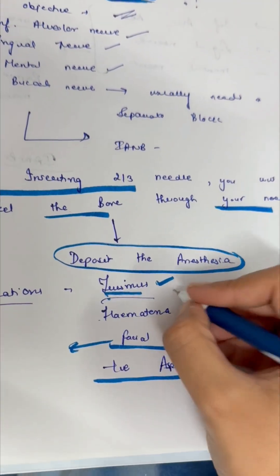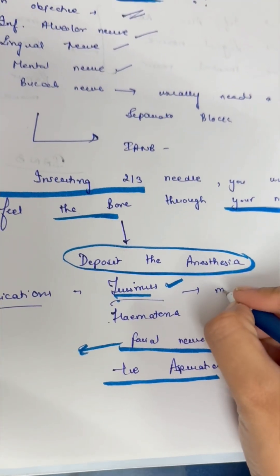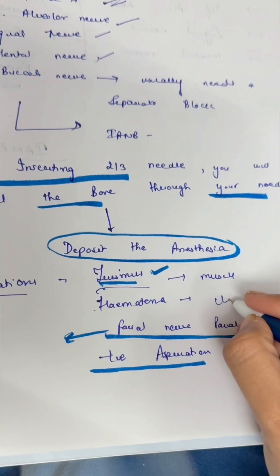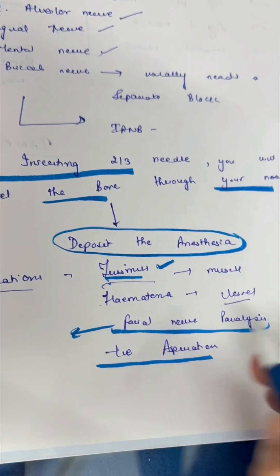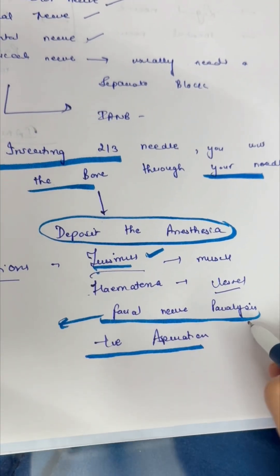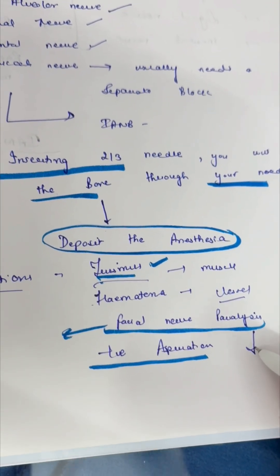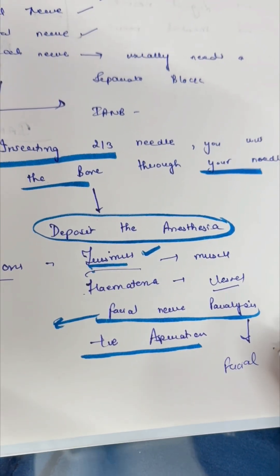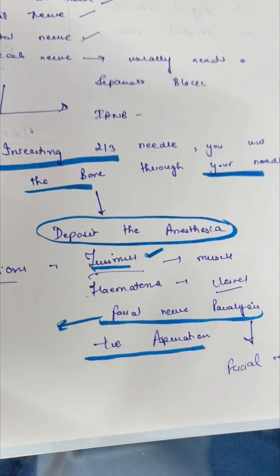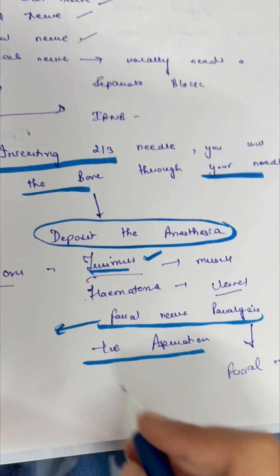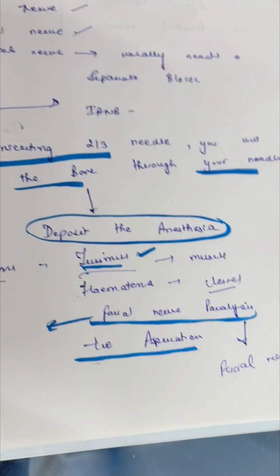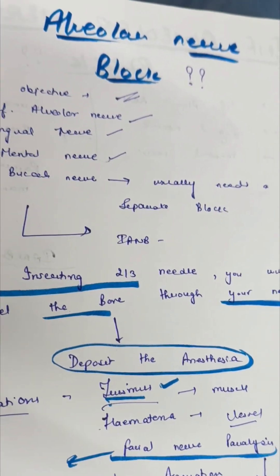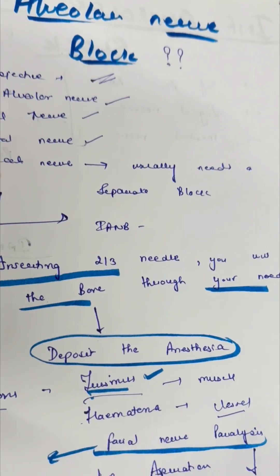The most common complications are trismus if you have injured any muscle, and hematoma if you have injured any blood vessels in that area. Facial nerve paralysis is also a concern, so it is very important to keep the facial nerve in consideration. Always aspirate before you inject your anesthesia to check for positive aspiration.